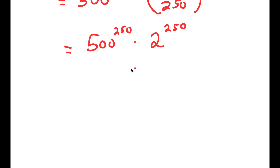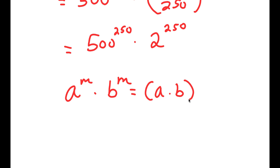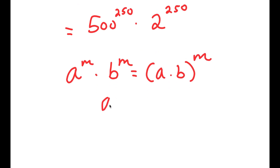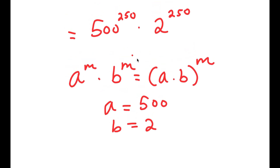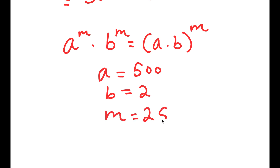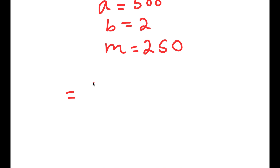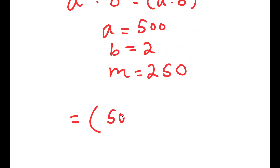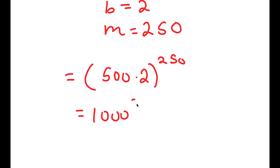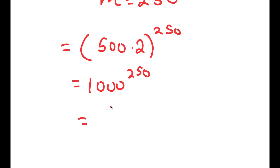And if I have something in the form a to the power of m times b to the power of m, this is equal to a times b to the power of m. So in this case, a is 500, b is 2, and m is 250. So I get 500 times 2 to the power of 250, which is equal to 1000 to the power of 250. And this is the same thing as 10 to the power of 750.